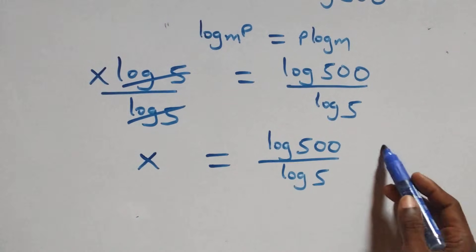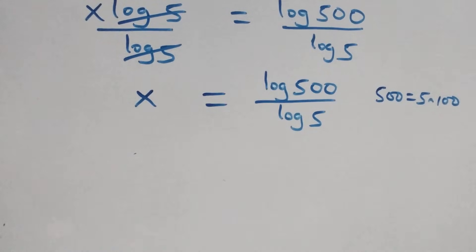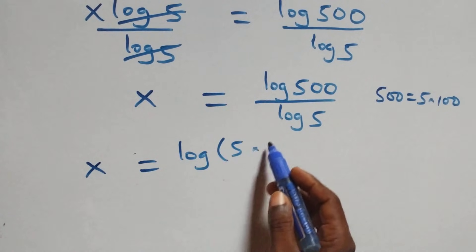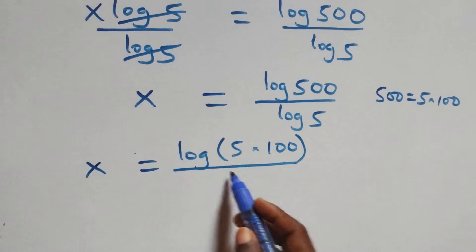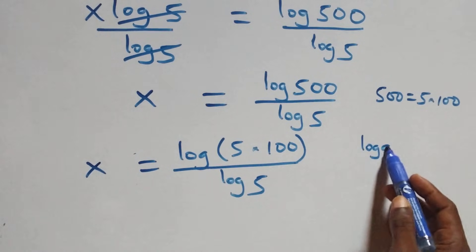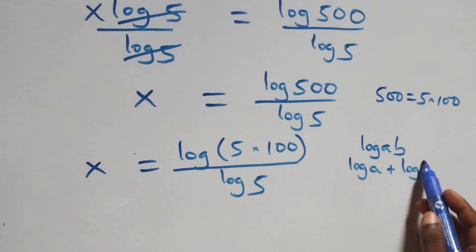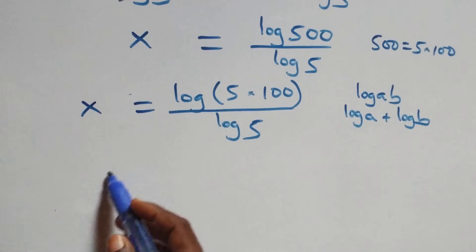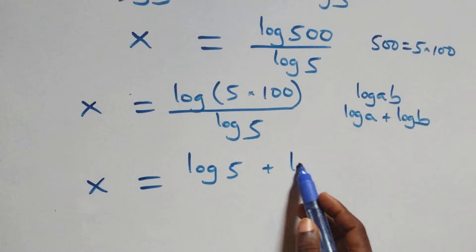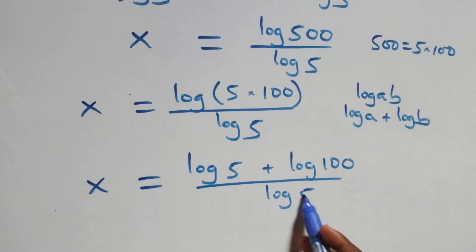From here, 500 can be written as 5 times 100. Which implies all we have here becomes x equals to log of 5 times 100 over log 5. We apply log(a × b) equals log a plus log b, giving x equals to log 5 plus log 100 over log 5.